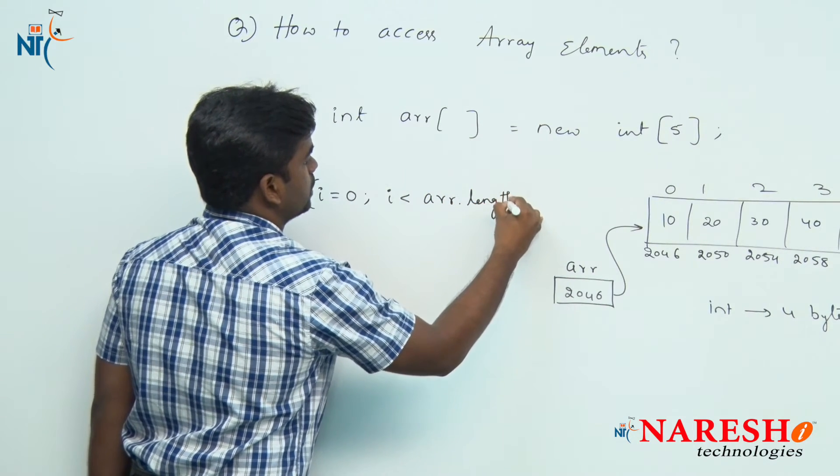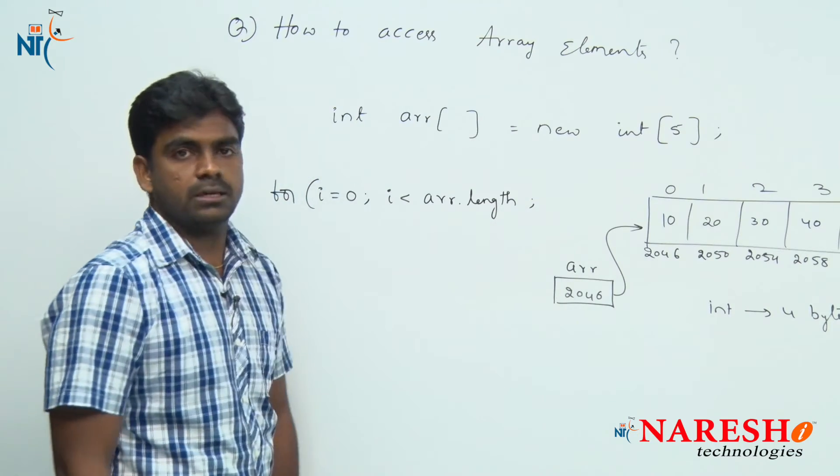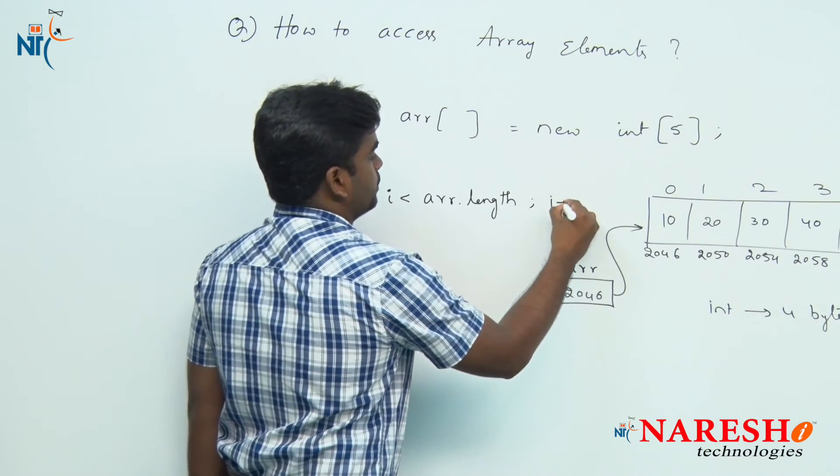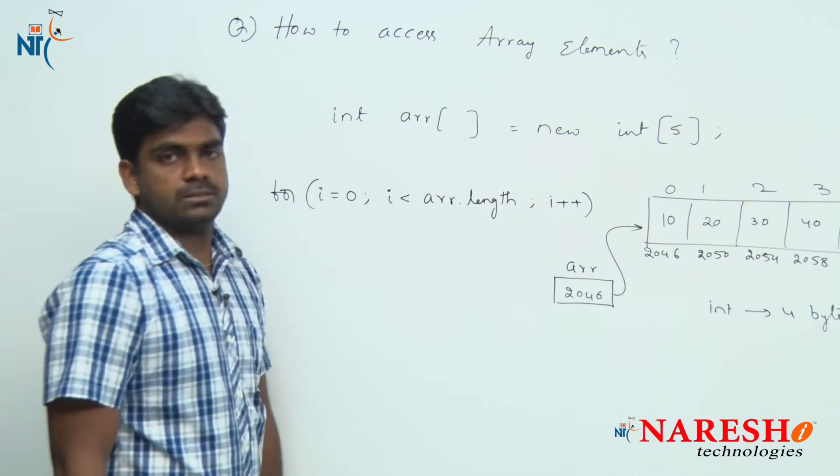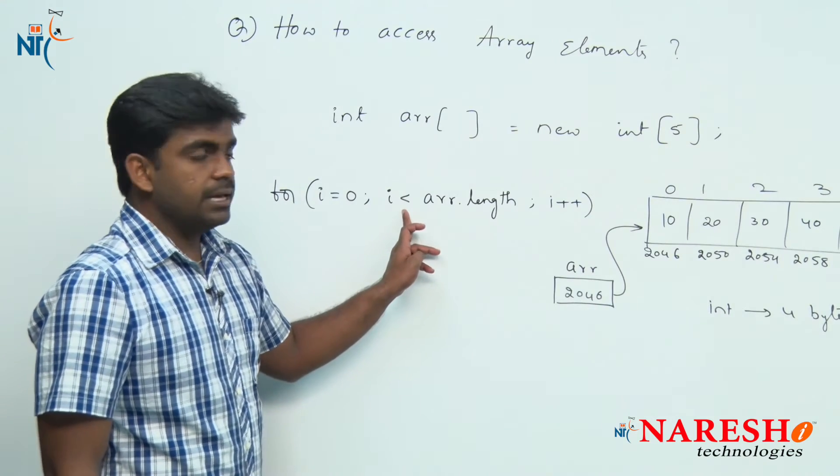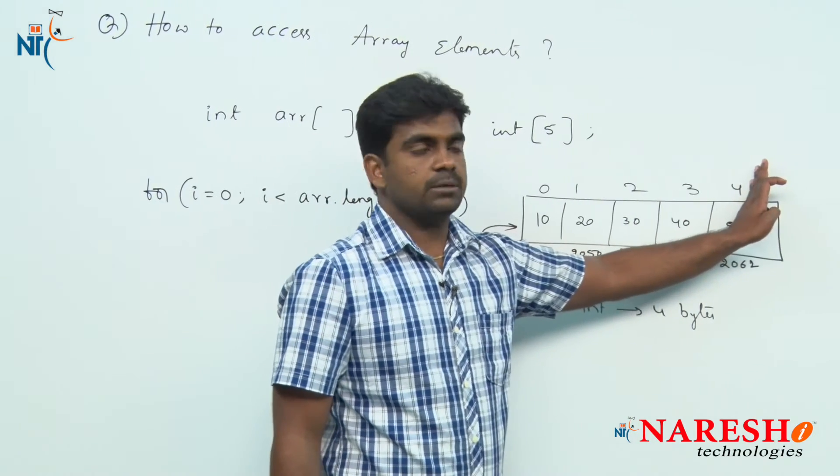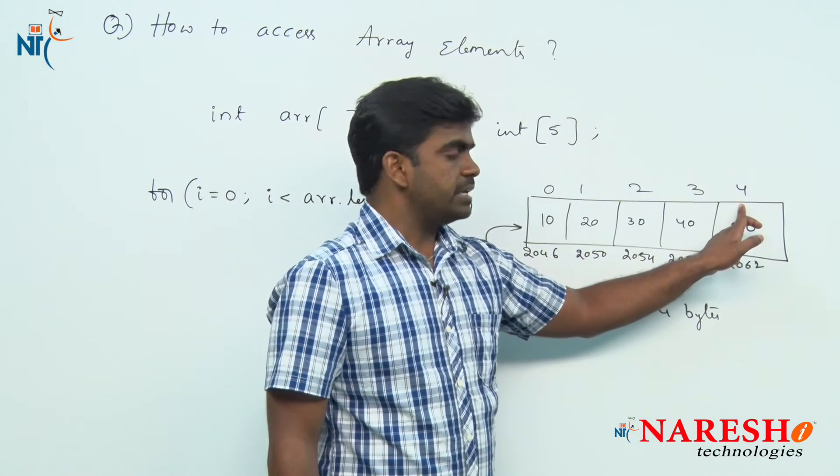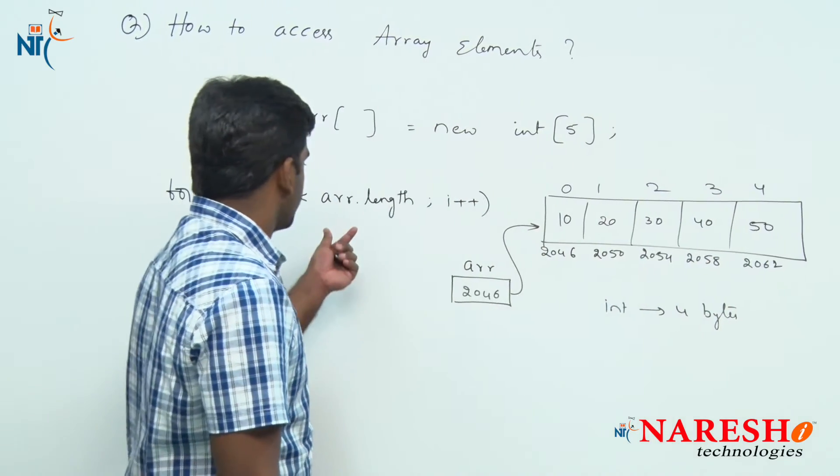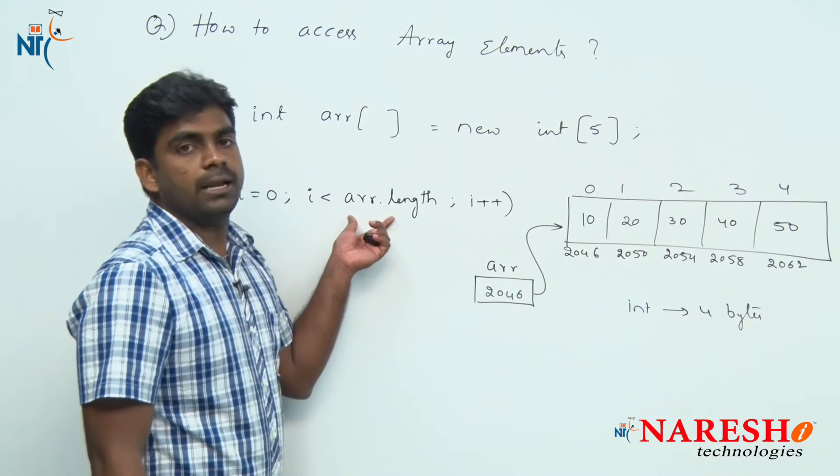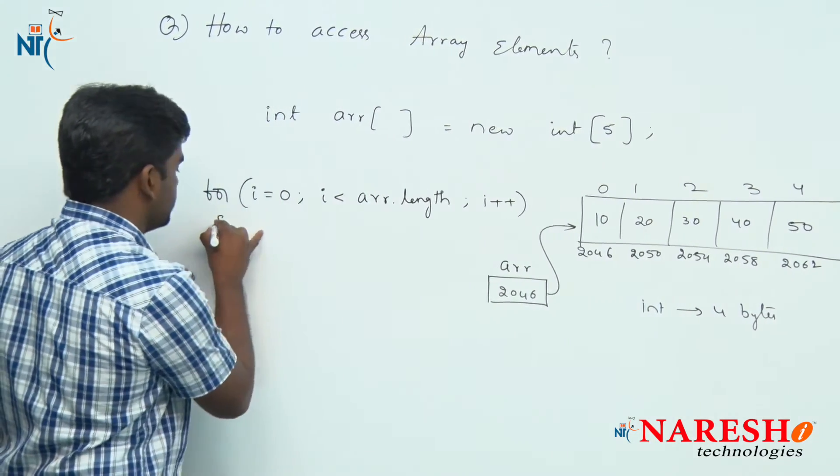We can use this length keyword to get the length. Why sir less than length? Index starts with 0 to less than length only. Nothing but if length is 5, 5 minus 1 is 4. That is why here it is ARR dot length and here we are printing.